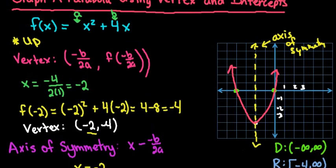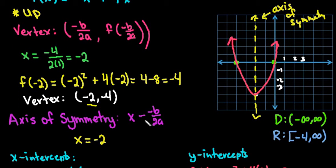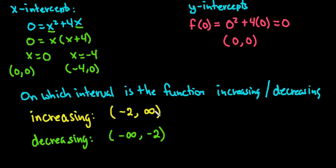To recap: determine if the parabola opens up or down by the sign of the leading coefficient — positive opens up giving a minimum, negative opens down giving a maximum. The vertex is found using negative b over 2a and f of negative b over 2a. The axis of symmetry goes through x equals negative b over 2a. X-intercepts are found by plugging in zero for y; y-intercepts by plugging in zero for x. The function is increasing where y values go up and decreasing where y values go down.